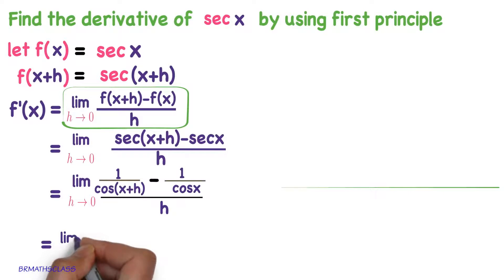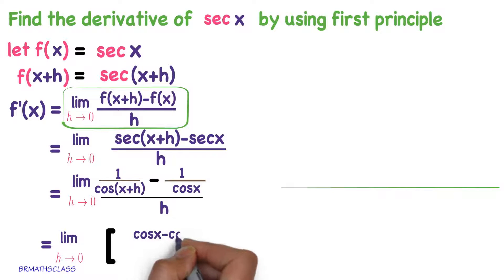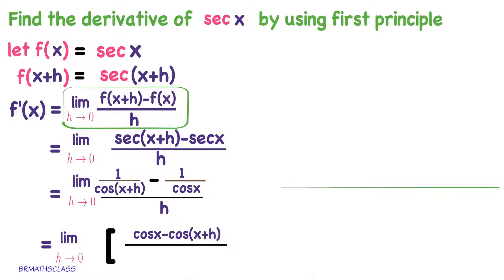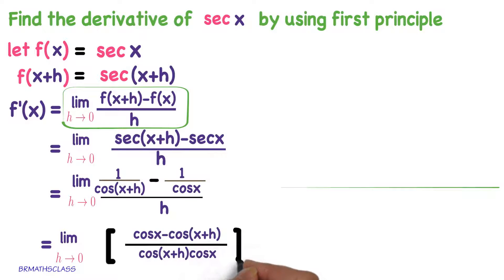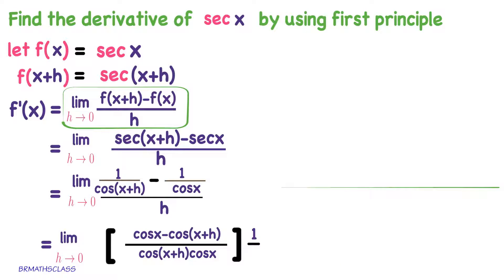Limit h tends to 0. Now observe that the numerator is cos x minus cos of x plus h, divided by the LCM which is cos of x plus h into cos x, into 1 by h. This can be understood very easily from the above step.